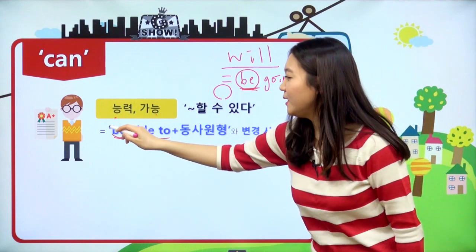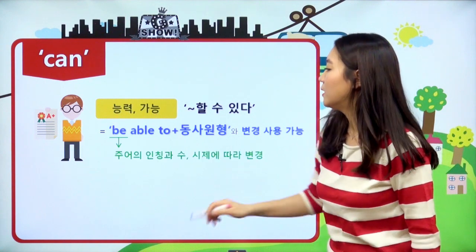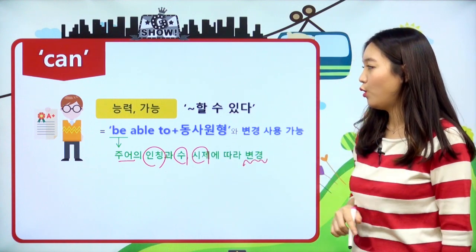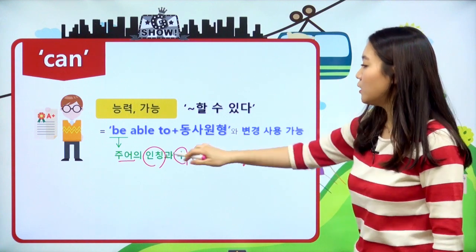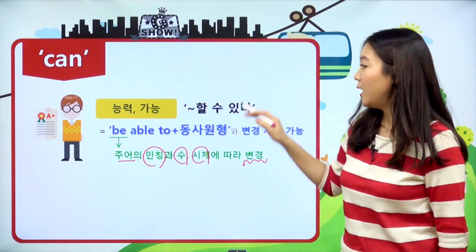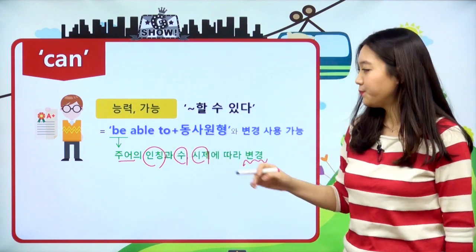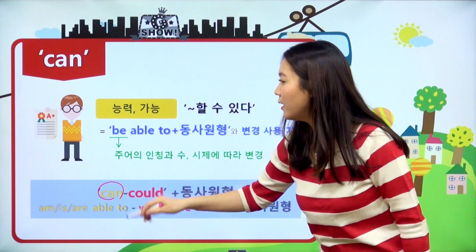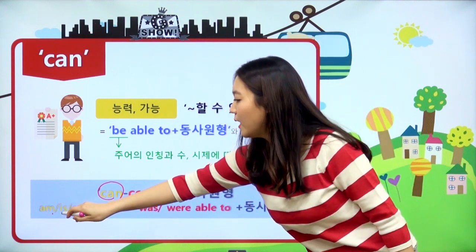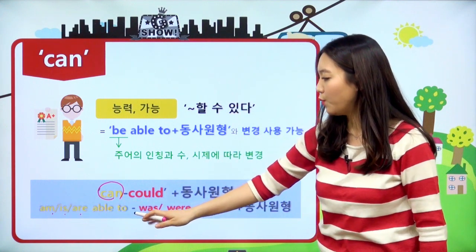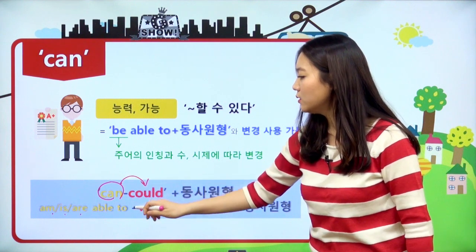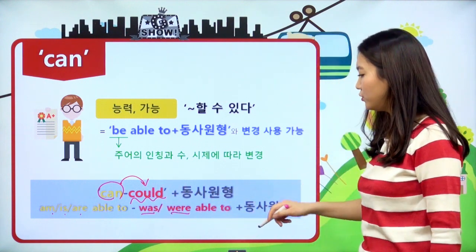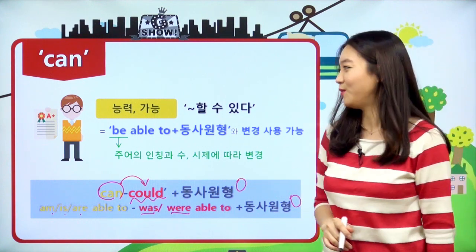똑같은 규칙이 적용됩니다. be able to도 마찬가지로 be동사는 주어의 인칭과 수에 따라, 그리고 시제에 따라서 변경이 되어야 해요. 조동사는 인칭과 수에 따라 변경되지 않는다고 했는데, be going to나 be able to는 예외이고 변경이 되어야 한다는 거 꼭 따로 기억해 주시고요. can 같은 경우에 능력/가능은 am, is, are 이 세 가지 able to로 변경해 주시면 되고, 과거일 경우에는 can의 과거형인 could이고, was 또는 were able to를 사용하시면 됩니다.